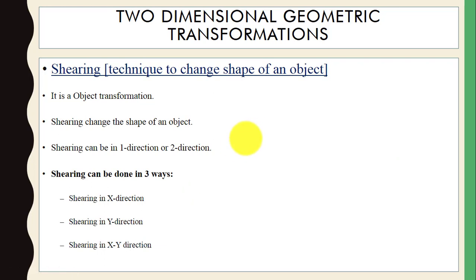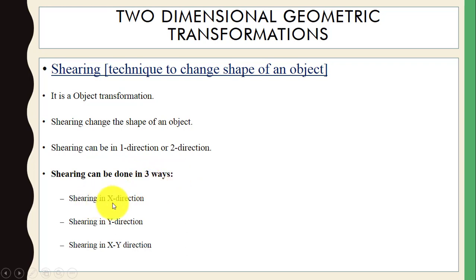Now we have shearing, which is a technique to change the shape of an object. Using shearing you can change the shape of an object — it is an object transformation. It can be one-directional or two-directional, and we have three ways for shearing: in the x-direction, y-direction, and xy-direction.